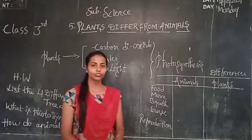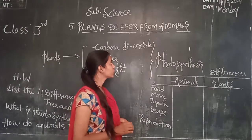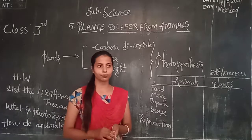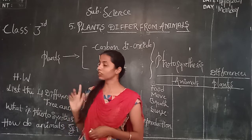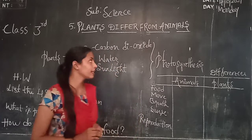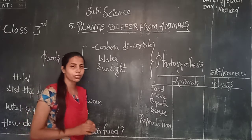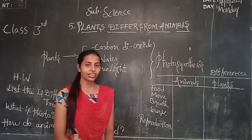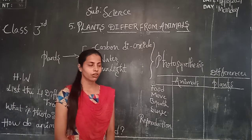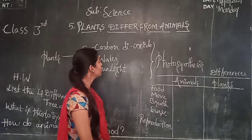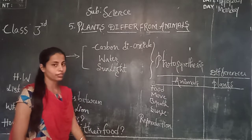Good afternoon. Today we are going to start a new chapter from Science for 3rd standard. The 5th chapter — 'Plants Differ from the Animals.' The previous chapter was living and non-living things.